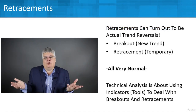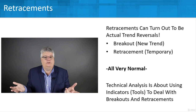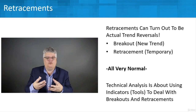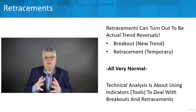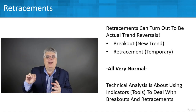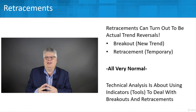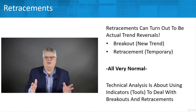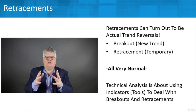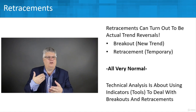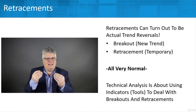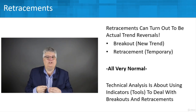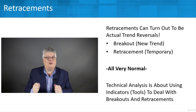Retracements can turn out to be actual trend reversals — what looks like a retracement might actually be a breakout with a new trend forming, or it might truly be temporary and then go back to the previous trend. All of this is very normal. With technical analysis and our indicators, we'll be able to identify both breakouts and retracements, spot great opportunities to purchase, and recognize when to sell and get out as well.